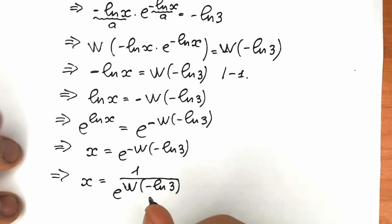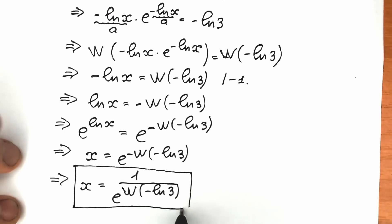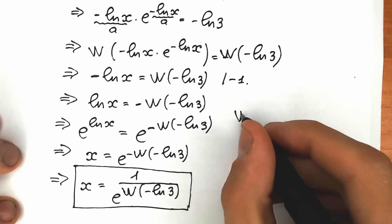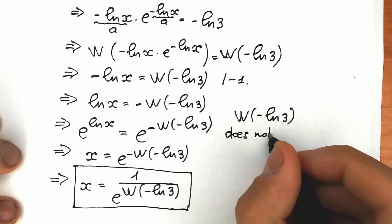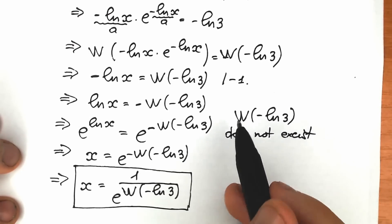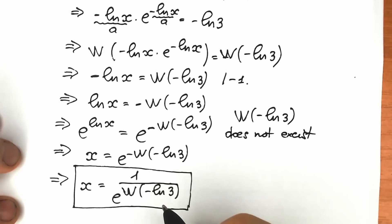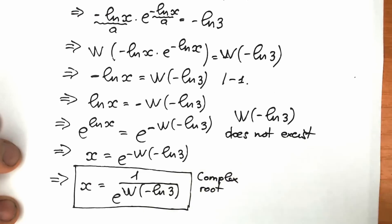However, a lot of students get confused when they plug this expression into a math library or calculator. The Lambert W function at the point minus natural log 3 does not exist in the real numbers. This means that in terms of real numbers, there is no real root — this is a complex solution. So the answer to this challenge is a complex root.